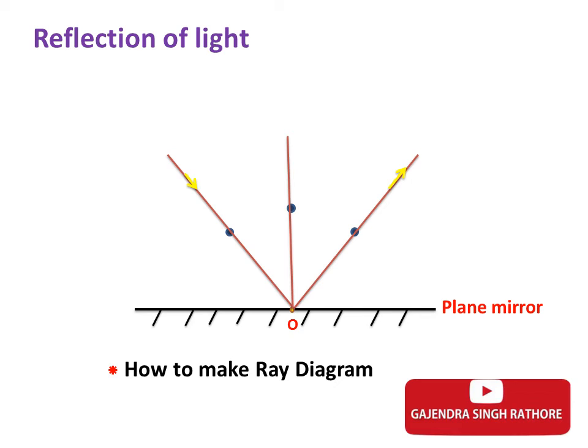Put arrow on the incident ray towards mirror and arrow on the reflected ray away from mirror like this. Both are theta. This is angle of incidence. This is angle of reflection. Both are equal. In this case, both angles are 40 degrees.